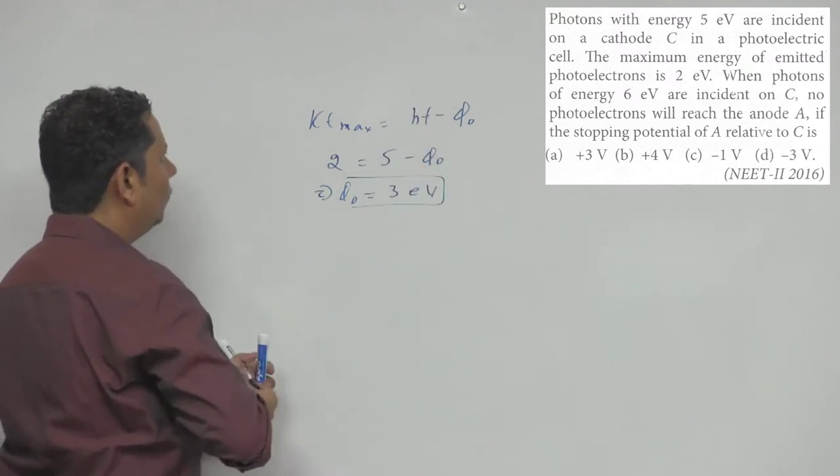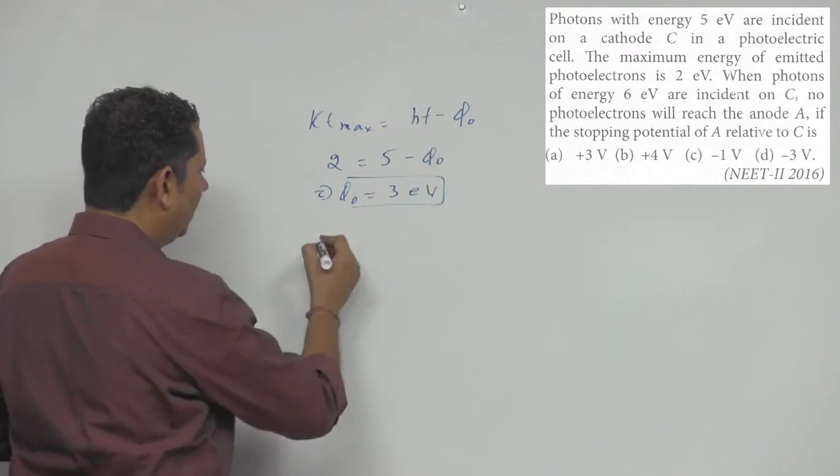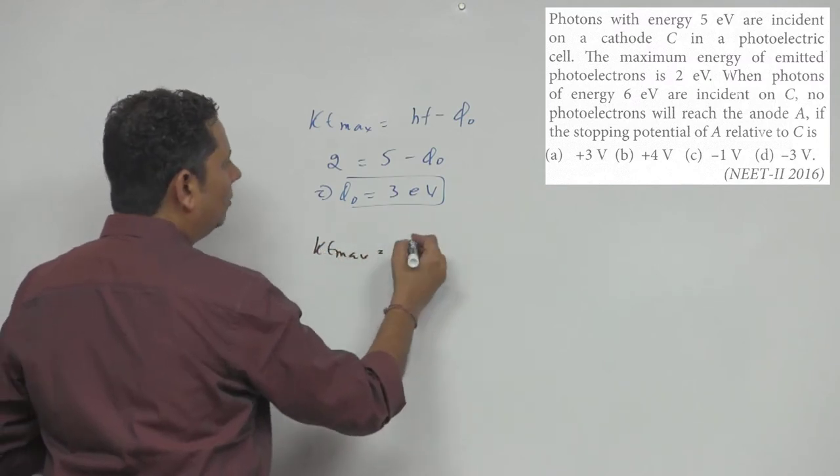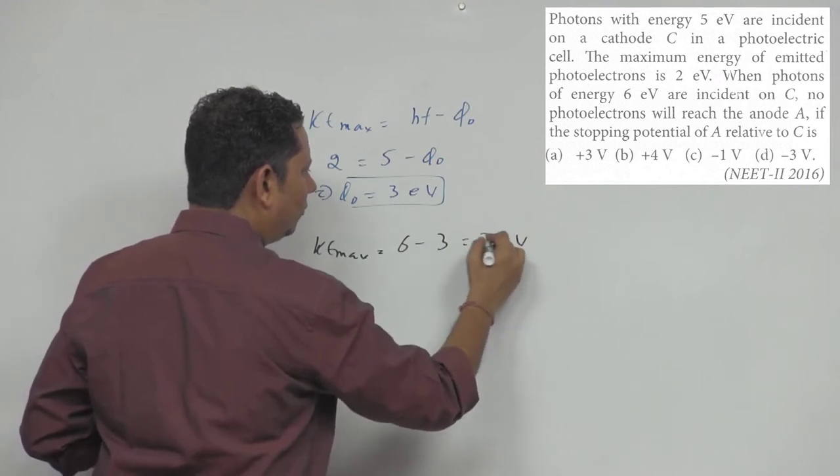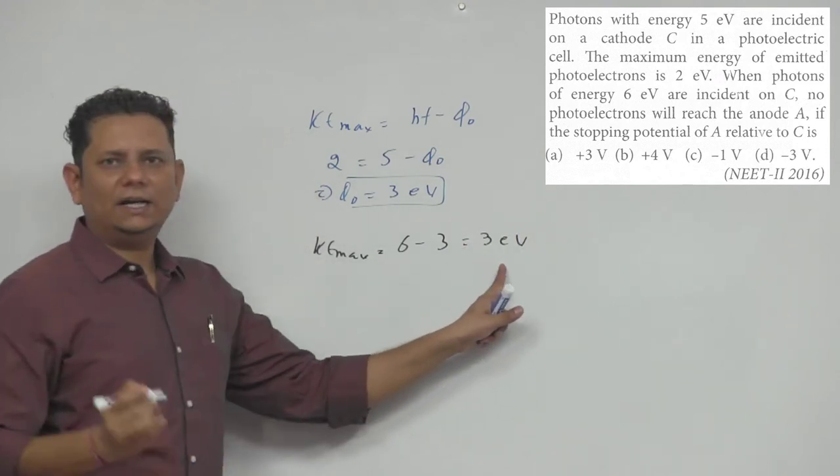So the kinetic energy maximum will be equal to 6 electron volt minus work function 3 electron volt. The kinetic energy you need to use now.